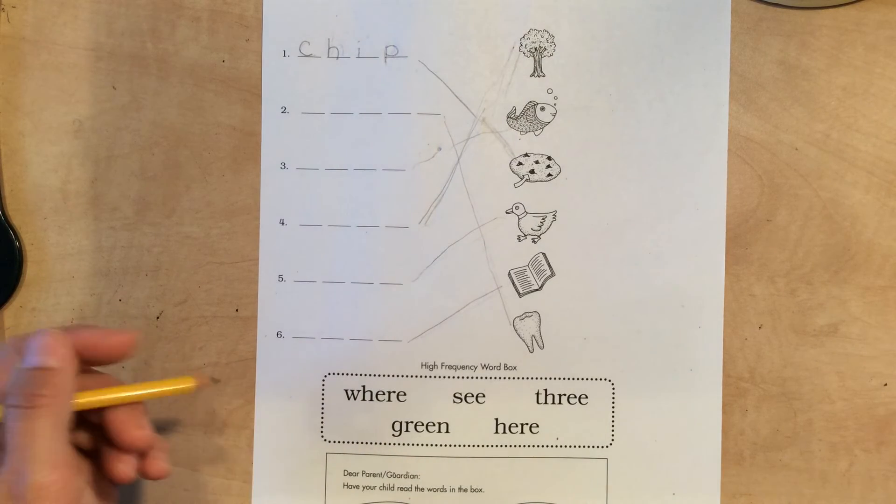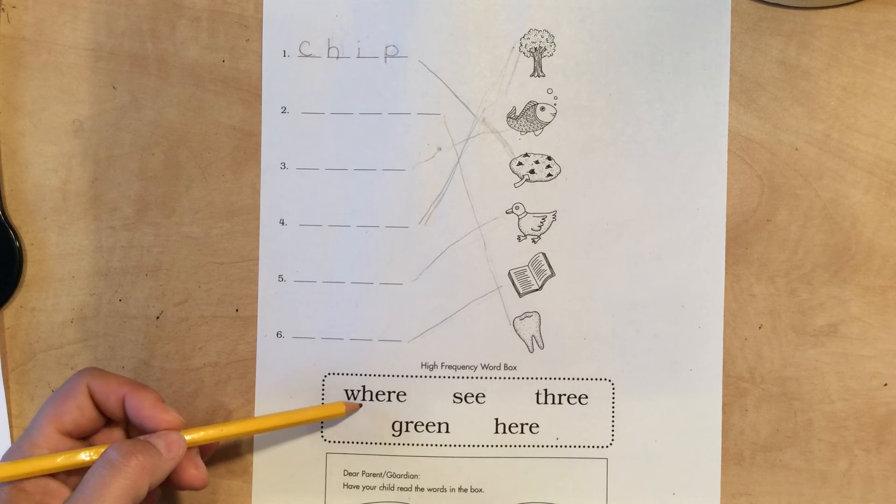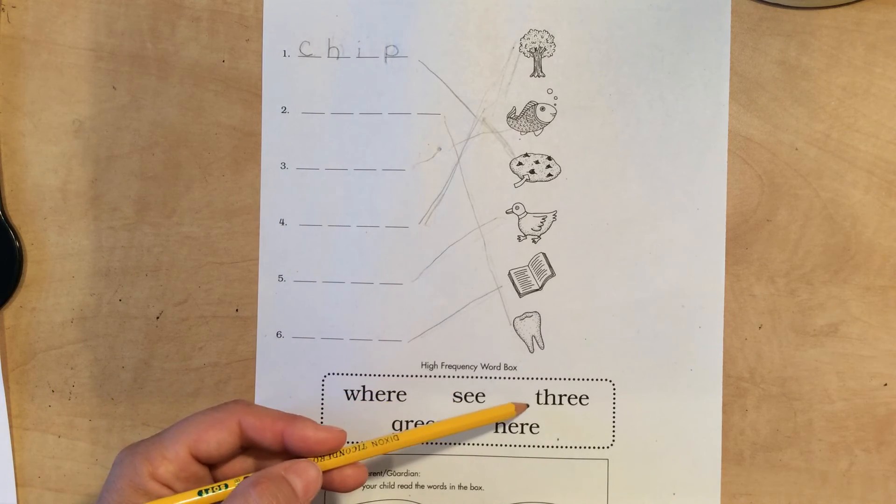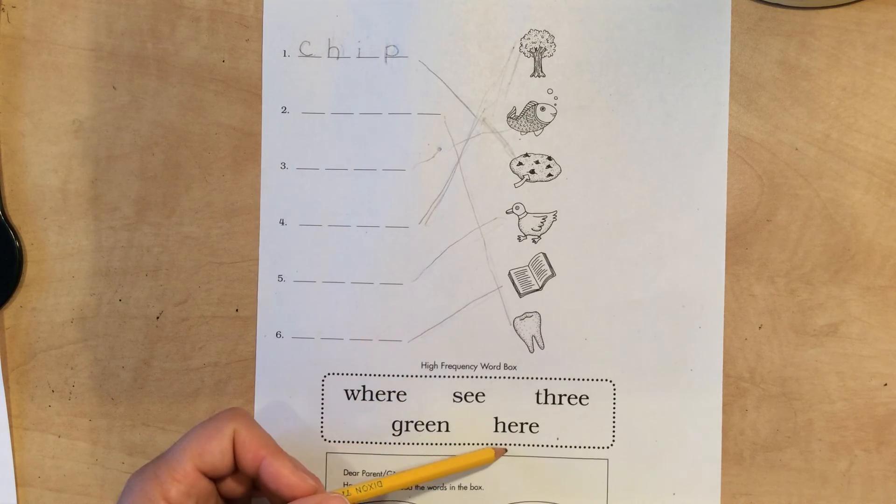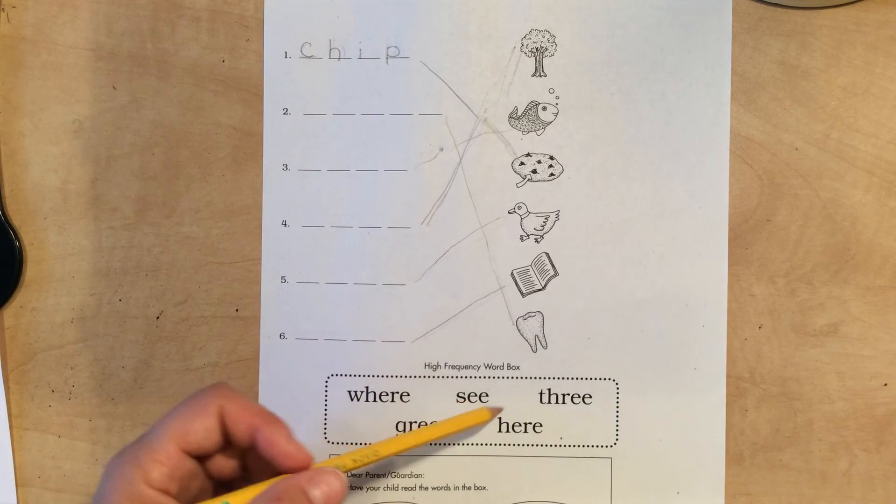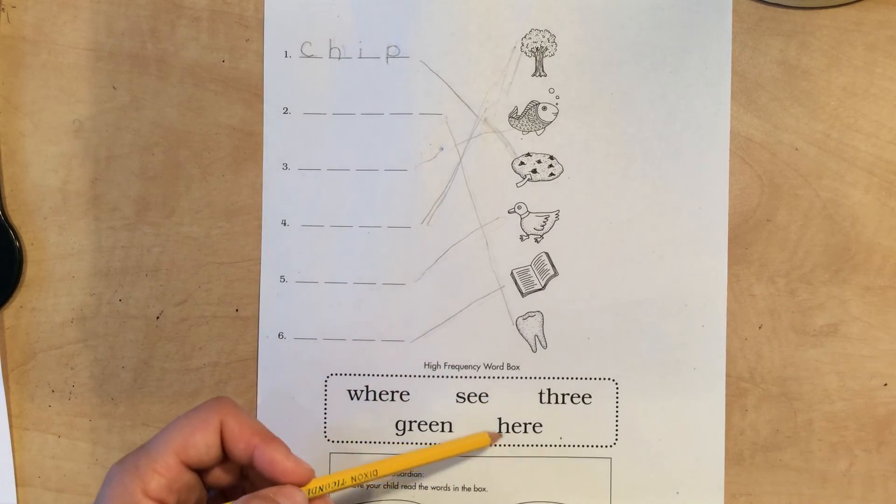And then down below we have some high frequency words. Where, see, three, green, here. Where, see, three, green, here.